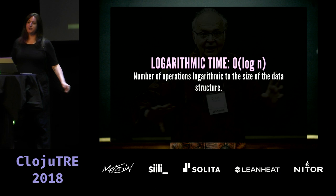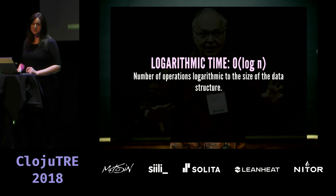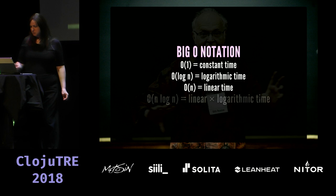Then we have logarithmic time, which is better than linear but not as good as constant time. You find logarithmic time with trees mostly. The operation is logarithmic to the size of the data structure — so if a structure has length one, you have one unit of work; length two, two units; length four, three units; length eight, four units. That's for log base 2, like a binary tree with a branching factor of two. Clojure's vectors have a branching factor of 32, giving log base 32, which is actually pretty close to constant time in practice.